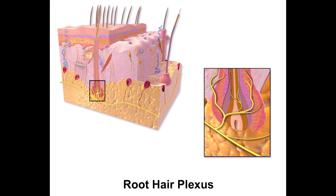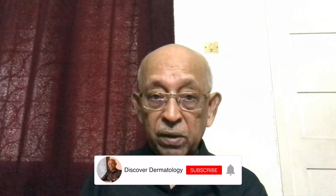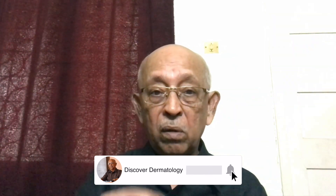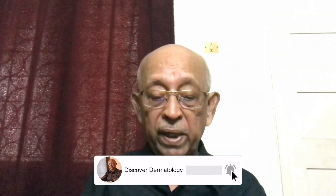On the other hand, the lower end of the hair called the bulb is richly endowed with nerves. Indeed, there is a veritable basket weave of nerve fibers around the hair bulb. So it is rather surprising that in spite of this nerve supply, there is no pain when you normally handle the hair.